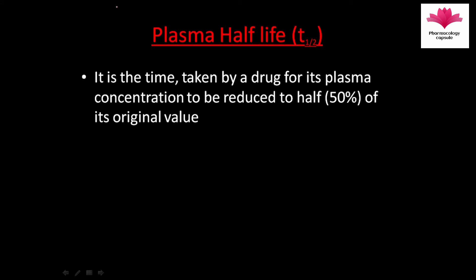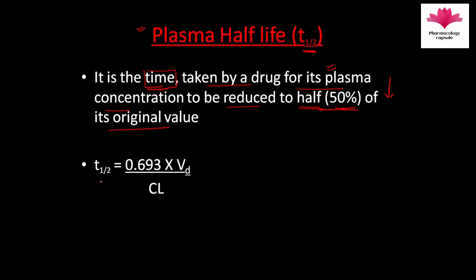Now we will see plasma half-life, also known as T-half. Plasma half-life is the time taken by a drug for its plasma concentration to be reduced to half of its original value — that is, reduced to 50%. The formula for plasma half-life is: 0.693 multiplied by volume of distribution, divided by clearance. This is again a very important formula.